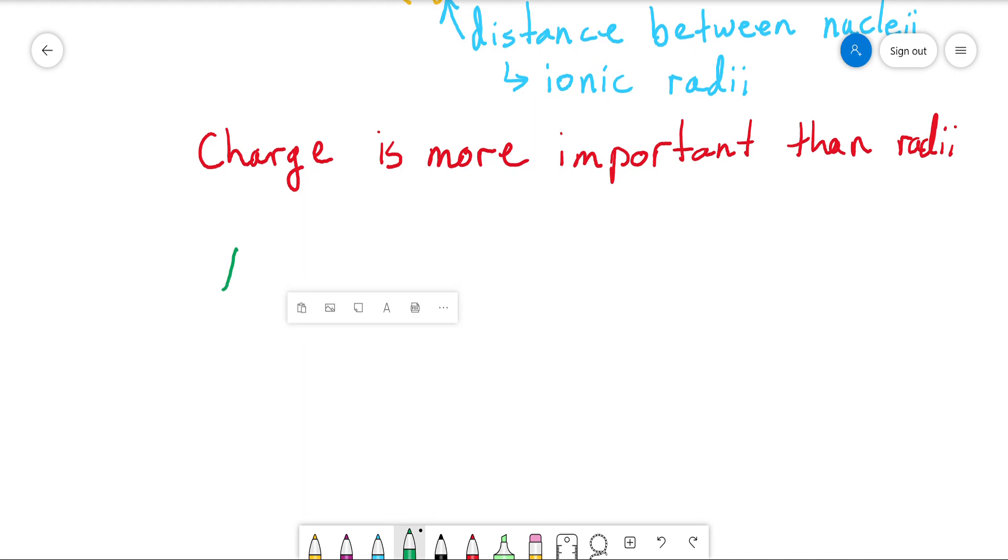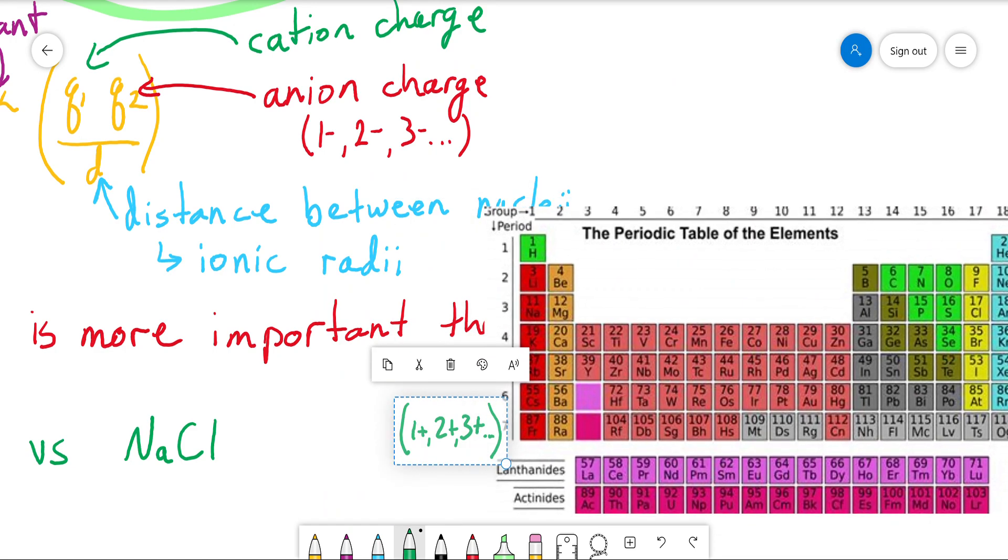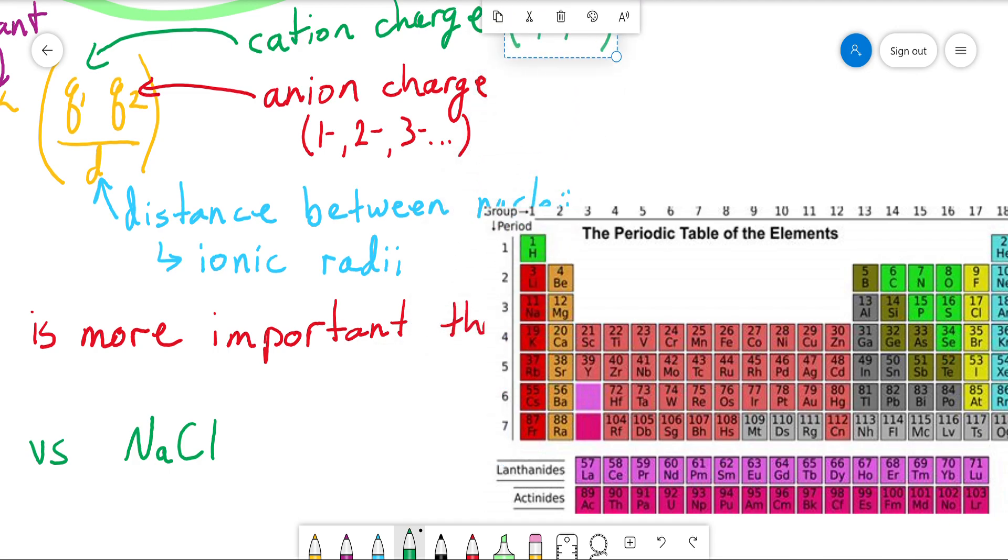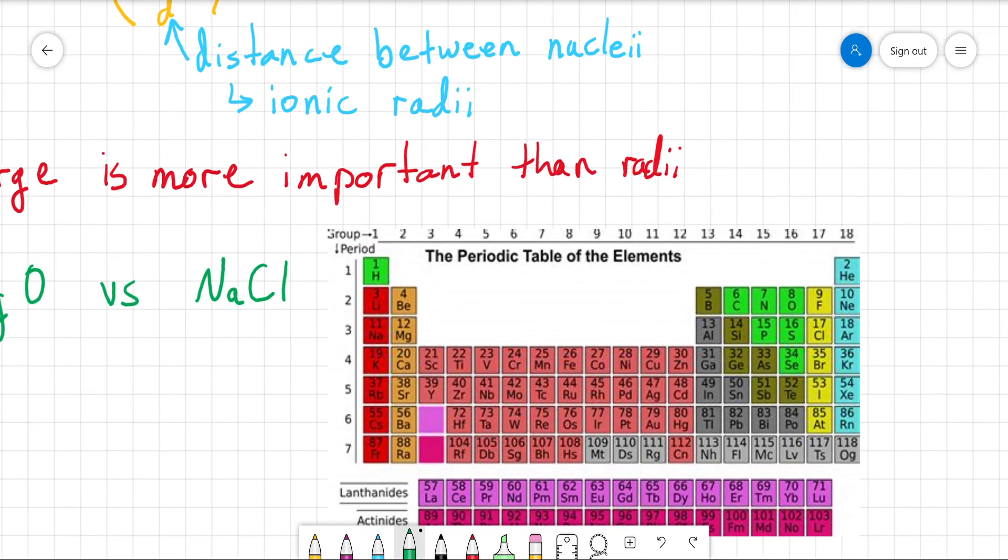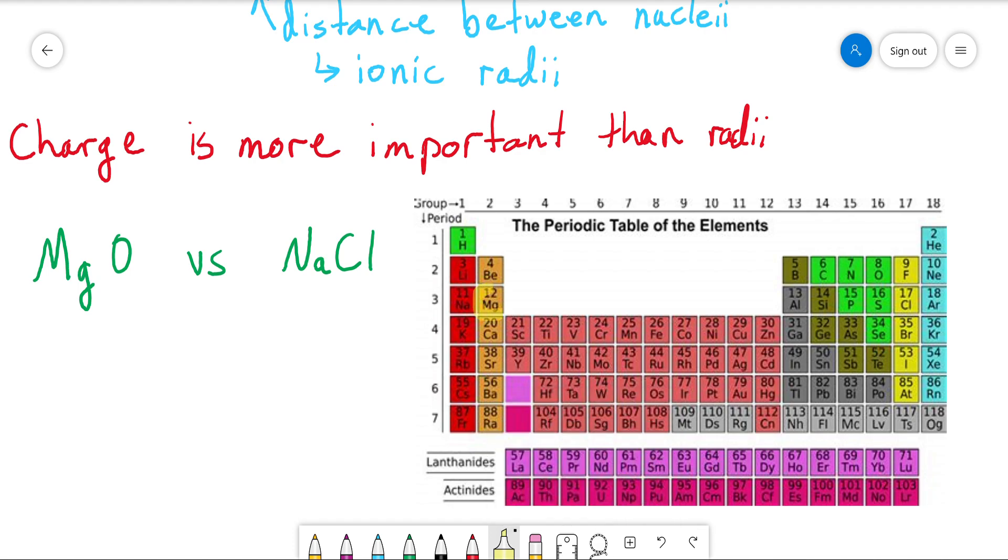MgO versus NaCl. Now ask yourself, which one has the highest lattice energy? Let me just grab my periodic table here. Let's look at MgO versus NaCl. Mg right there. Oxygen right there. NaCl. I think you all know where those are. But Na is right there. And Cl is right there. So if we look at these, which one's bigger?